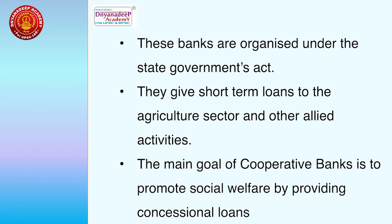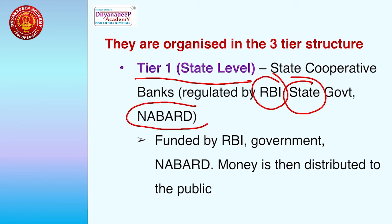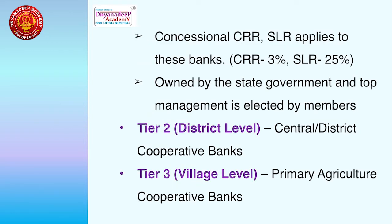Cooperative banks have a three-tier structure. The first tier is at the state level — state cooperative banks — regulated by RBI, state government, and most importantly under direct control of NABARD (National Bank for Agricultural and Rural Development). NABARD is a refinancing institution that provides funds to state cooperative banks. These banks are funded by RBI, government, and NABARD. CRR is pegged at 3% and SLR at 25% for these banks.